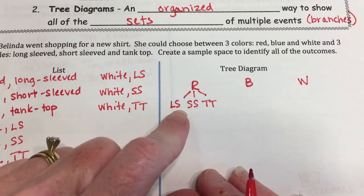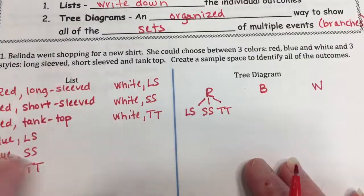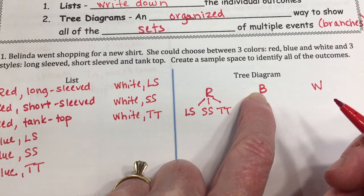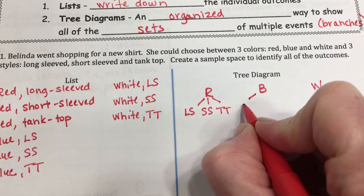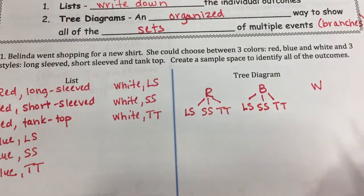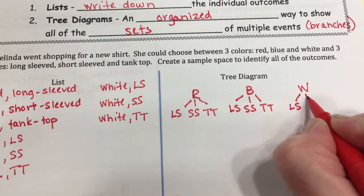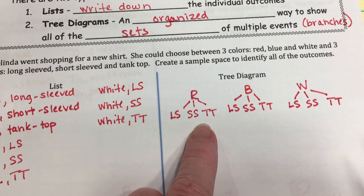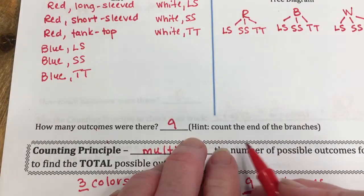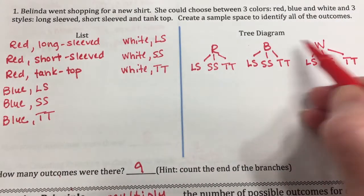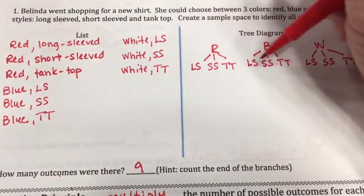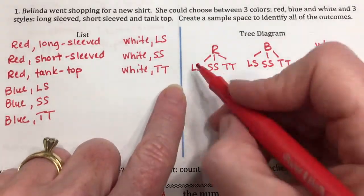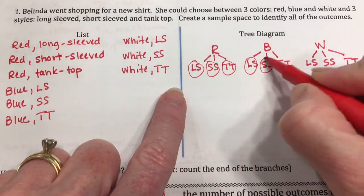Tree diagrams are sometimes a shorter way to find the sample space, but you just have to keep it organized. So I go back to the color blue and draw three branches: blue long sleeve, blue short sleeve, and blue tank top. Same thing with white — white long sleeve, white short sleeve, and white tank top. To know how many outcomes are in my sample space, I look at the end of each branch.